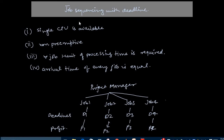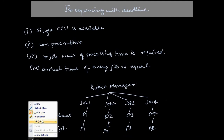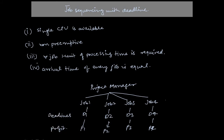In this video we will learn about the job sequencing problem with deadlines, which is solved by the greedy algorithm. The problem assumes a single CPU is available, jobs are non-preemptive meaning if one job is executing the CPU cannot start another, every job requires one unit of processing time, and the arrival time of every job is equal.